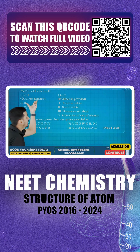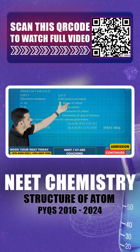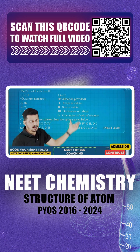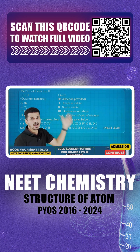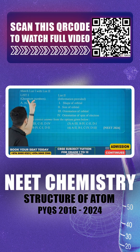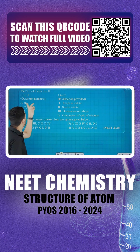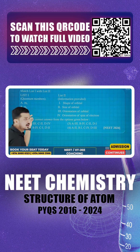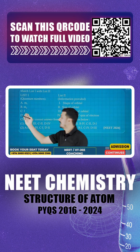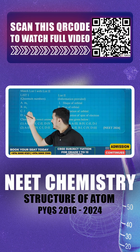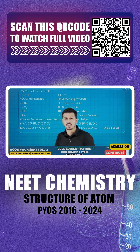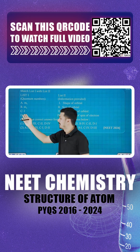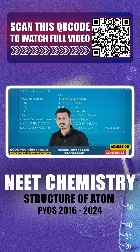In List 1, they have given quantum numbers. In List 2, some information is provided. We have to match them. They have given: ML, the magnetic quantum number; MS, the spin quantum number; L, the azimuthal quantum number; and N, the principal quantum number.